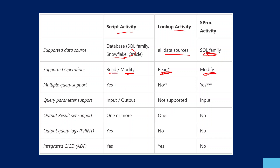With Lookup Activity, for an UPDATE query you append SELECT 1 at the end so it returns a result set. Stored Procedure Activity of course supports data modification. Script Activity supports multiple query execution — we ran SELECT * from Employee table and SELECT * from Departments table. That is not possible in Lookup Activity. Stored Procedure Activity supports multiple queries inside the procedure. For parameter support, we used one input parameter and supplied a value to it. Output result sets can be one or more — multiple queries return multiple result sets — whereas Lookup Activity always returns only one result set.